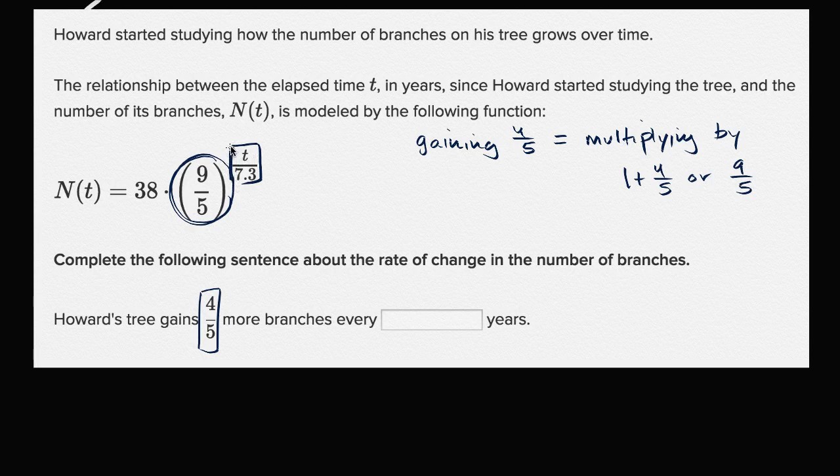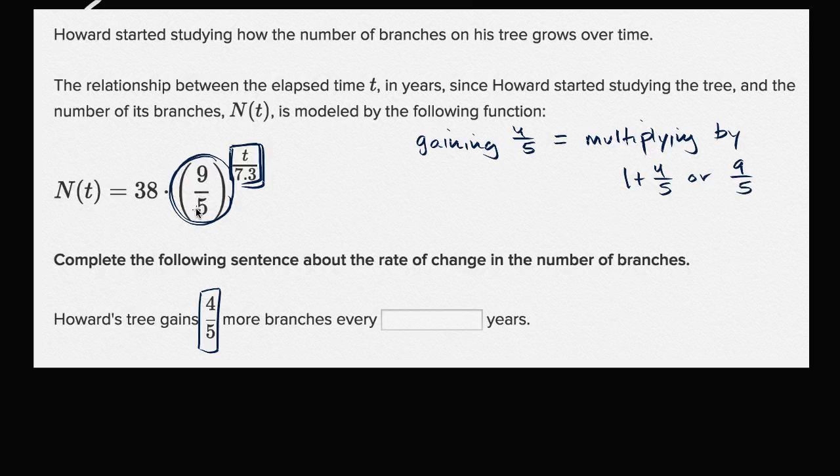Then this exponent is going to increase by a whole, and so you could view that as multiplying again by 9 fifths. So Howard's tree gains 4 fifths more branches every 7.3 years.